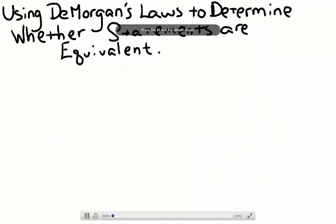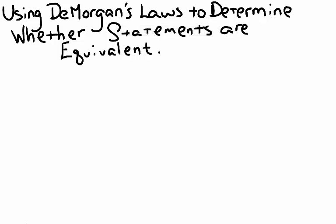In this video, we're going to be using DeMorgan's Laws to determine whether statements are equivalent. Two statements are equivalent if both statements have exactly the same truth table in the answer columns for each one. Equivalent statements are symbolized with the double arrow if and only if, also called bi-conditional.